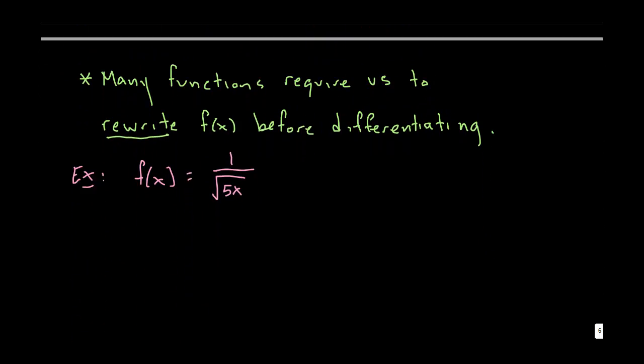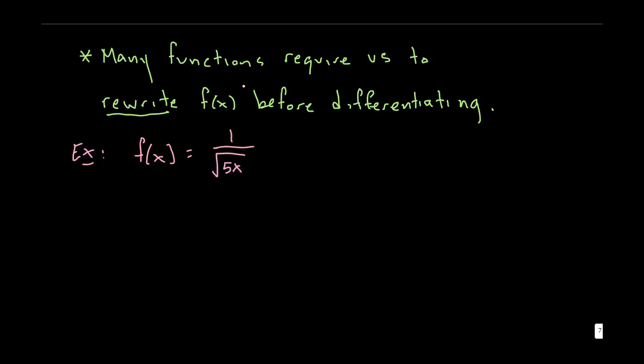Now a lot of functions require us to rewrite the function before we differentiate. Because this is extremely important. You can't take a derivative unless it explicitly matches one of the rules. So for instance this particular function, in no way matches any of the original rules. But if I work on it a little bit, maybe it will. Now notice I'm not differentiating yet. This is still f of x. I'm just rewriting it. Just some algebra steps here.